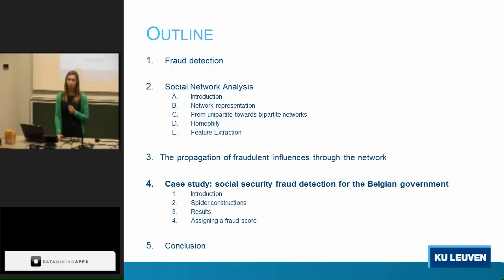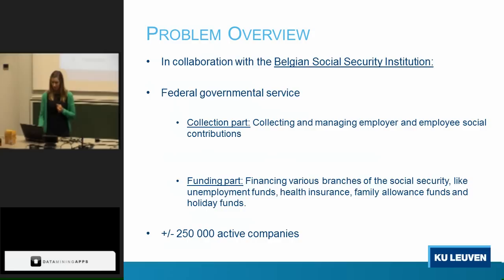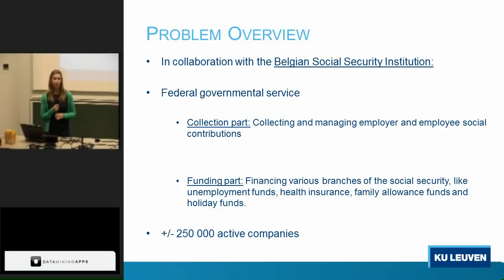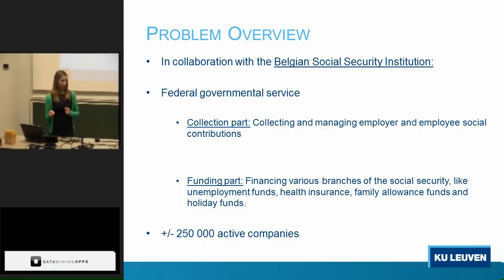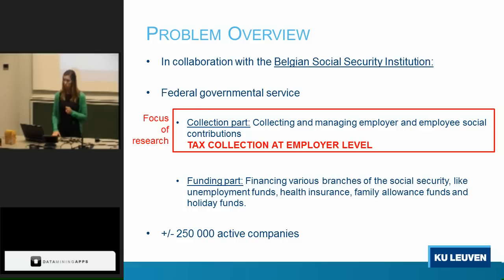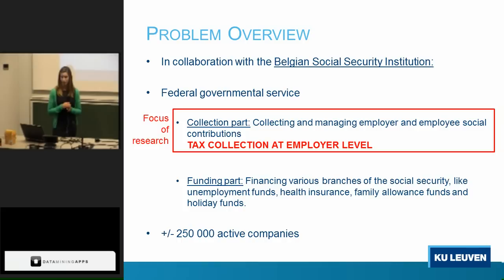So this is the theoretical part — does it work in practice? I want to introduce you to the social security institution of the Belgian government. What does the Belgian social security institution do? They have two responsibilities: first, they collect social contributions from companies; and second, they distribute these contributions to the appropriate funds, such as unemployment funding or health insurance. The part where companies contribute to the government is very sensitive to fraud. Their goal is to identify which companies will be fraudulent in the next period. Given that there are 250,000 active companies in Belgium and approximately 20 will be fraudulent in the next period, it's a far from obvious task to identify these 20.